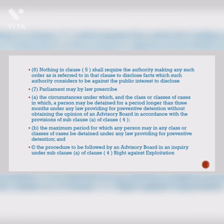Now we are done with the critical analysis. Two important case laws to note: the first was discussed earlier in the lecture, and the second is AK Roy v. Union of India (1982), in which it was held that preventive detention laws are subjected to judicial review only on limited grounds. Overall, some short factual points: preventive detention laws are a precautionary measure based on suspicion.